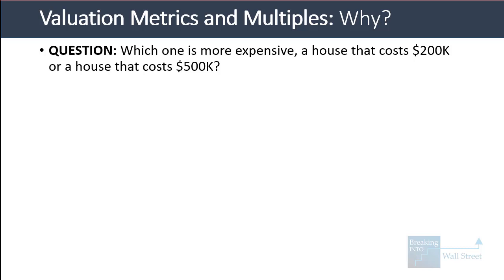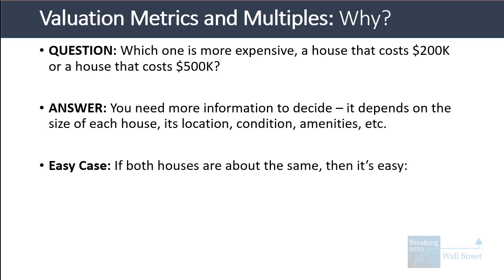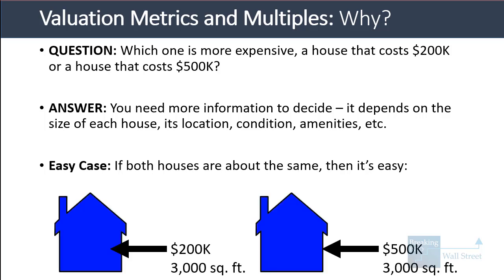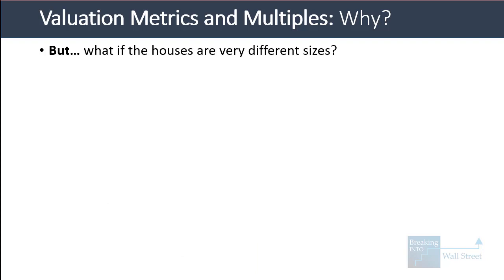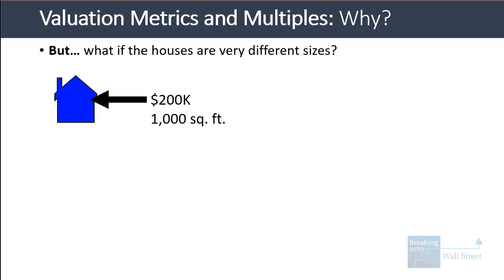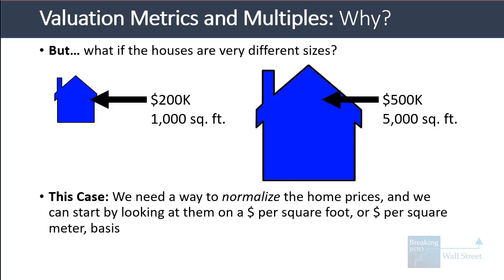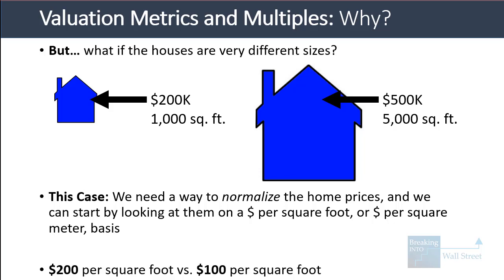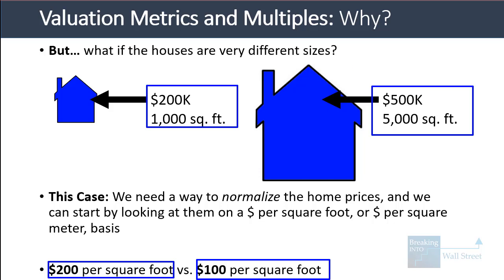An analogy often used is buying a house. What's more expensive — a house that costs $200,000 or one that costs $500,000? You need more information because it depends on size, location, condition, and amenities. If both are the same size, obviously the $500,000 one is more expensive. But what if one is 1,000 square feet at $200,000 and the other is 5,000 square feet at $500,000? We normalize by looking at price per square foot: the first is $200/sq ft, the second is $100/sq ft — so the first is actually more expensive once you normalize for size.